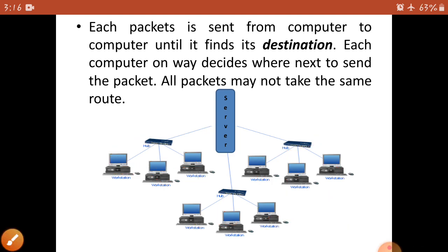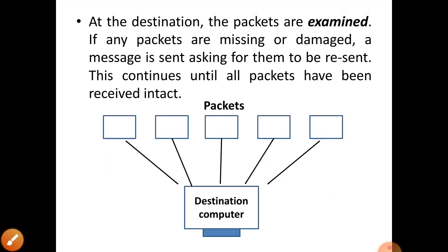At the destination, the packets are examined. If any packets are missing or damaged, a message is sent asking for them to be resent. This will continue until all packets have been received intact. When the packets arrive at the destination, they are examined — if a packet is damaged or a part is missing, a resend request is made.